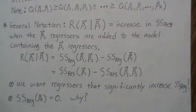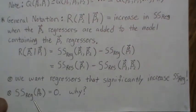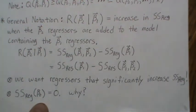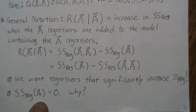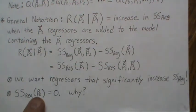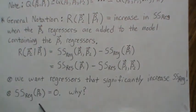The goal is we want regressors that significantly increase the sum of squares regression. Now, the sum of squares regression with only beta₀ is zero — and here's why. The sum of squares regression measures the differences between the mean and the regression line. When we have a model with just beta₀, the least squares estimate is the mean, y-bar. So when we look at the sum of squares regression, we're taking y-bar minus y-bar, which is zero.